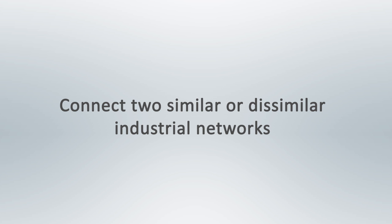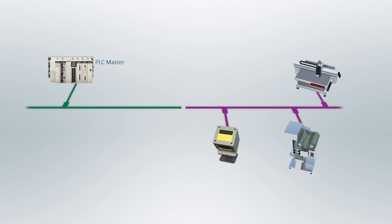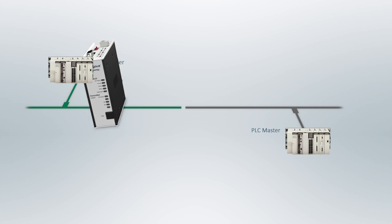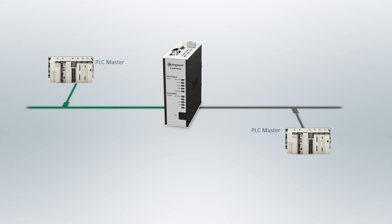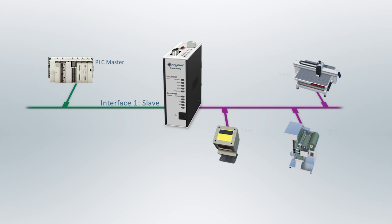If you want to connect two similar or dissimilar industrial networks, you first need to know if your network infrastructure has one PLC master which should communicate to several slaves, or if you have a PLC master on the other network as well. The reason for this is that if you have two PLCs, the gateway will be slave on both sides. If you only have one PLC, the gateway will be slave to the PLC and act as a master to the slaves on the subnetwork.